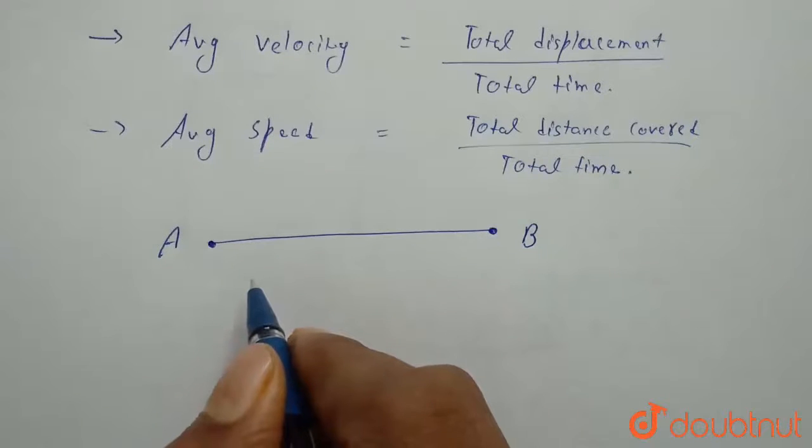In this case, both displacement and distance are same. If particle moves on straight line, then distance and displacement are same.